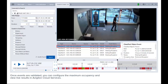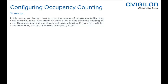In this lesson, you learned how to count the number of people in a facility using occupancy counting. First, create an entry event to detect anyone entering an area, then create an exit event to detect anyone leaving. If you have multiple areas to monitor, you can label each occupancy area.